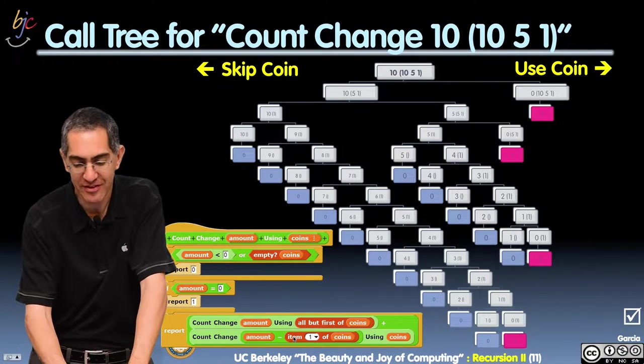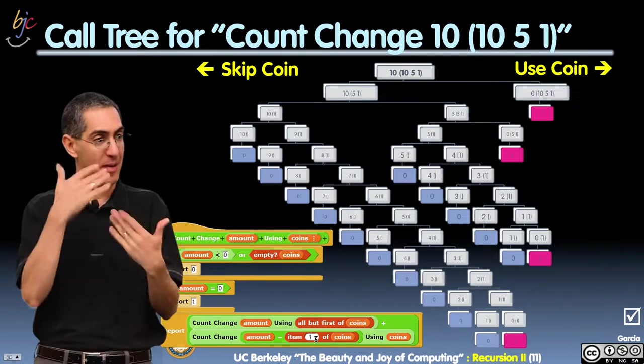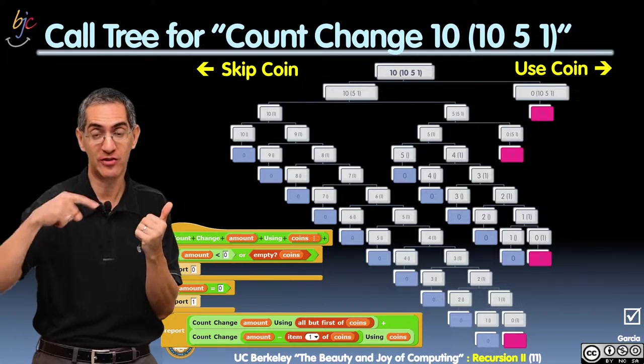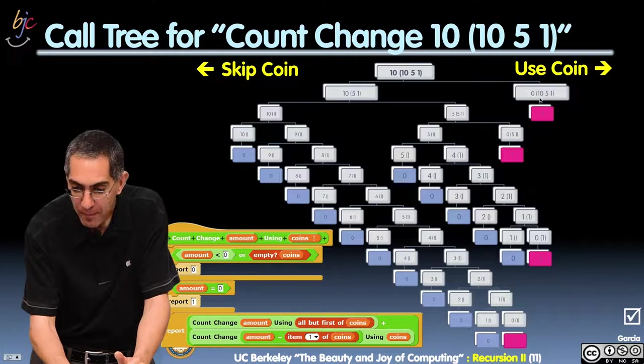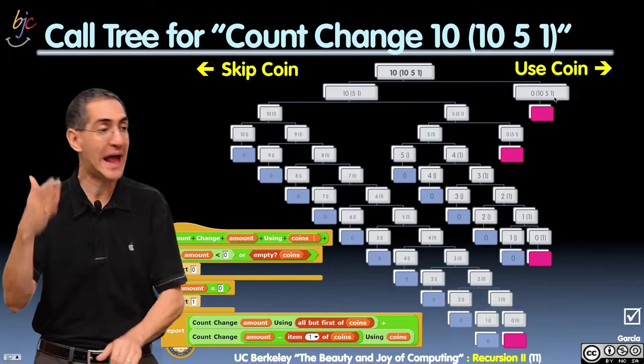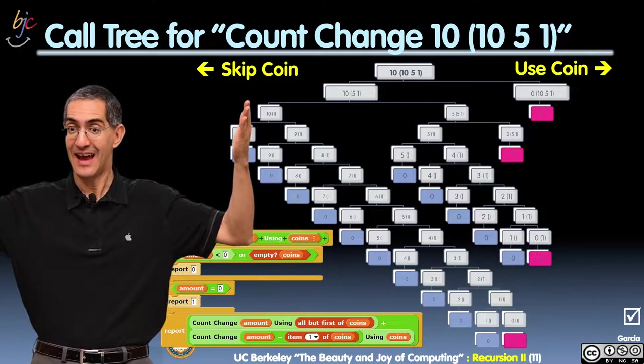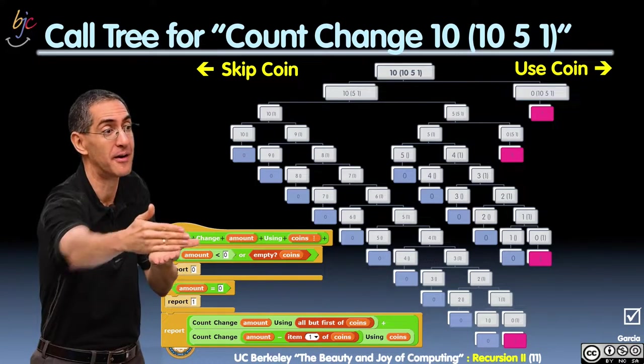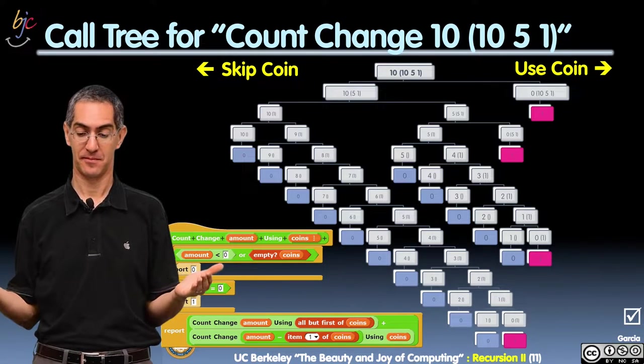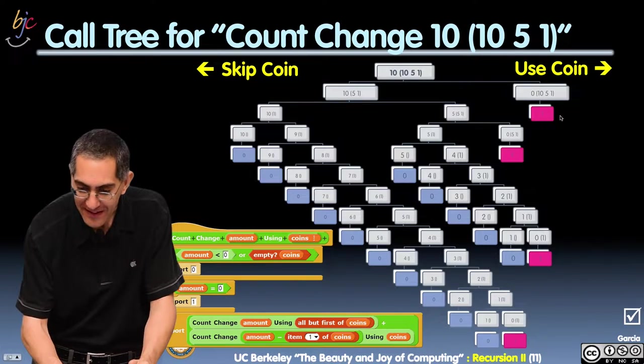Count change amount minus the first. That means you use the coin and you decrement how much you're asking for by the coin amount. So it's 10 cents minus 10 cents. Zero. I'm recursing on count change, zero, 10, 5, and 1. So the same list of coins, but I got zero. What happens when I get called with zero? I report one. Success. And what's the success? All the coins have been deducted so far, which is just one of them. A dime. Guess what? There's my dime solution. I love it. This right here is my dime solution, right there. That's my dime solution.